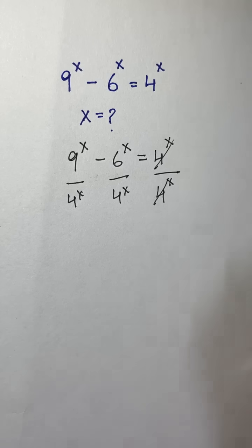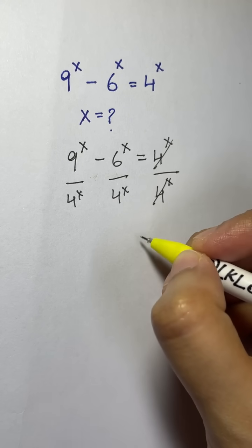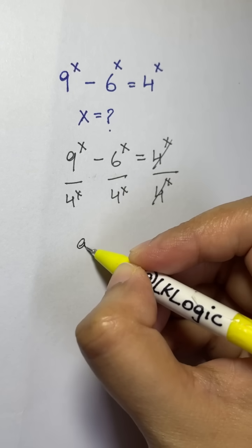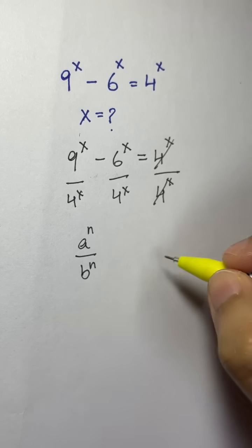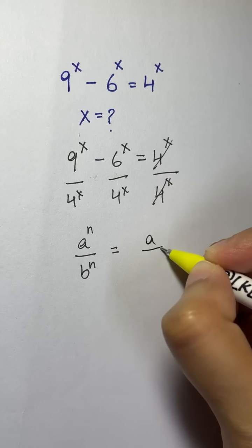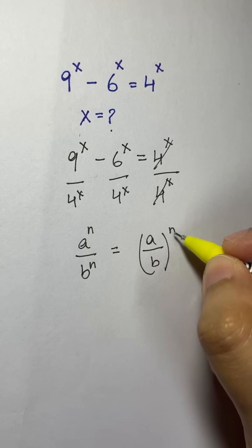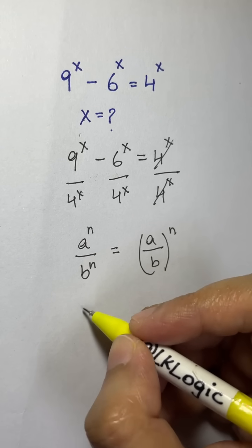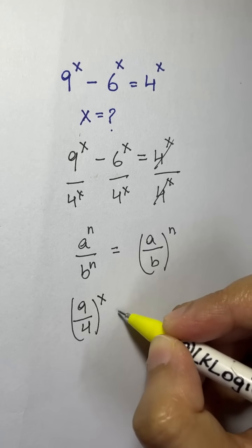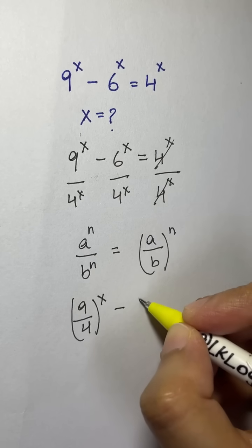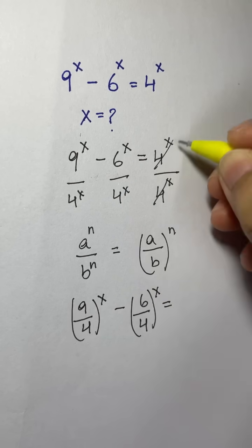We have 9 to the power of x over 4 to the power of x. I'll use the law that says a to the power of n over b to the power of n equals (a/b) to the power of n. So this becomes (9/4) to the power of x minus (6/4) to the power of x equals 1.